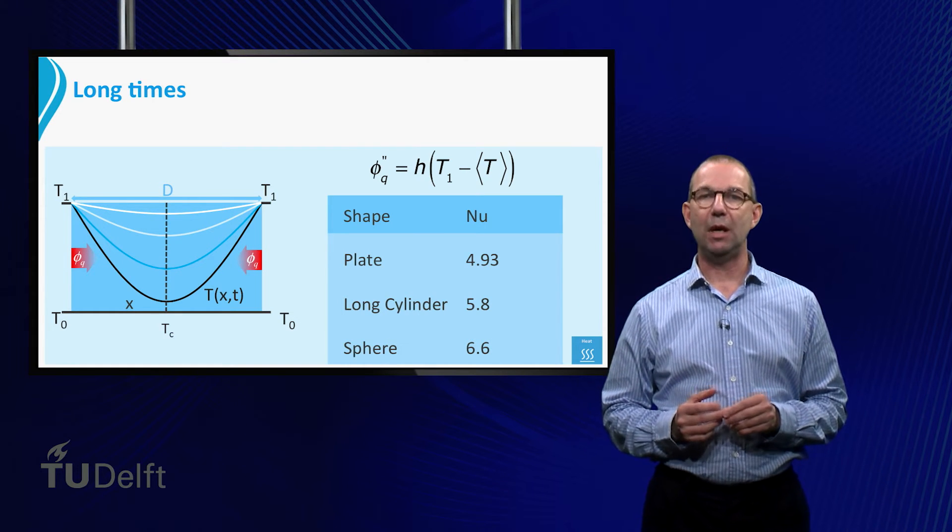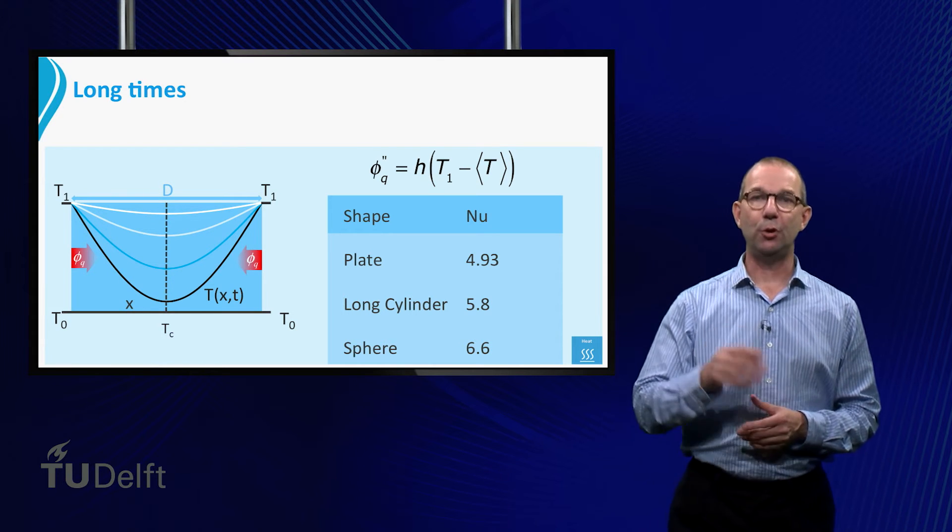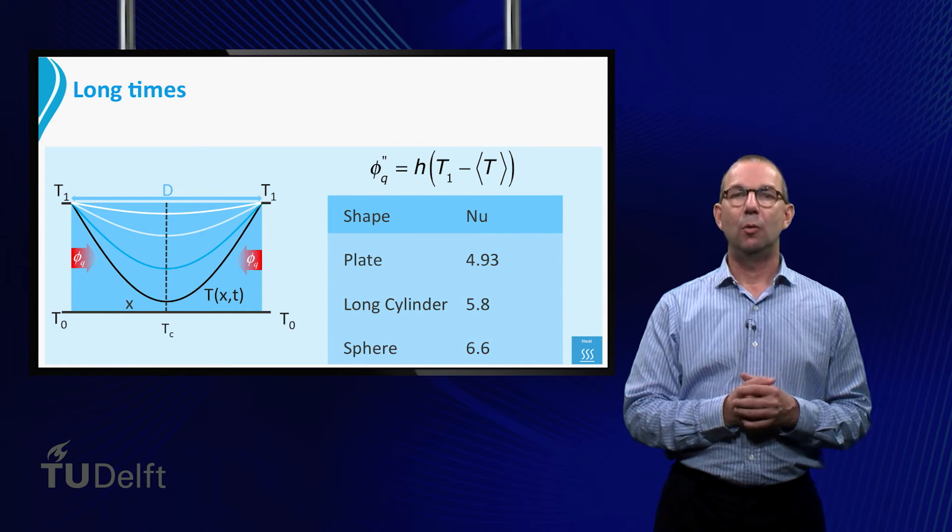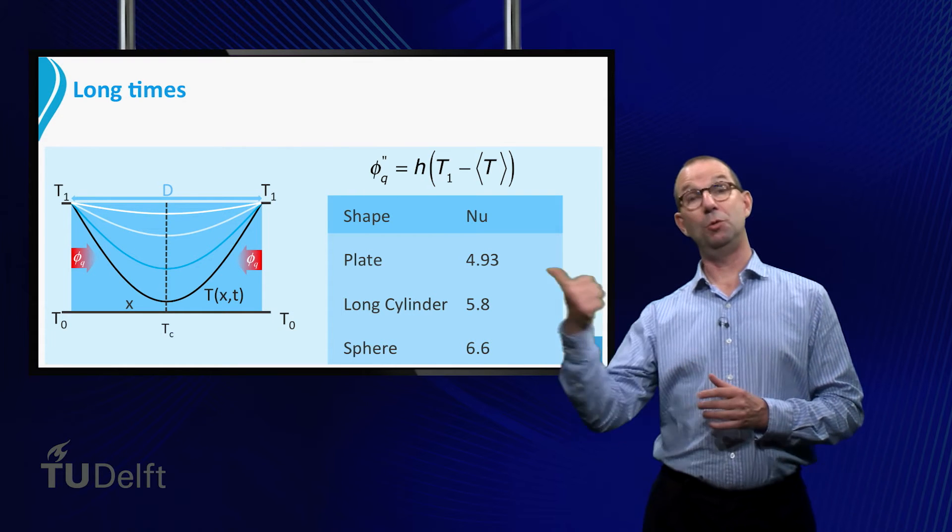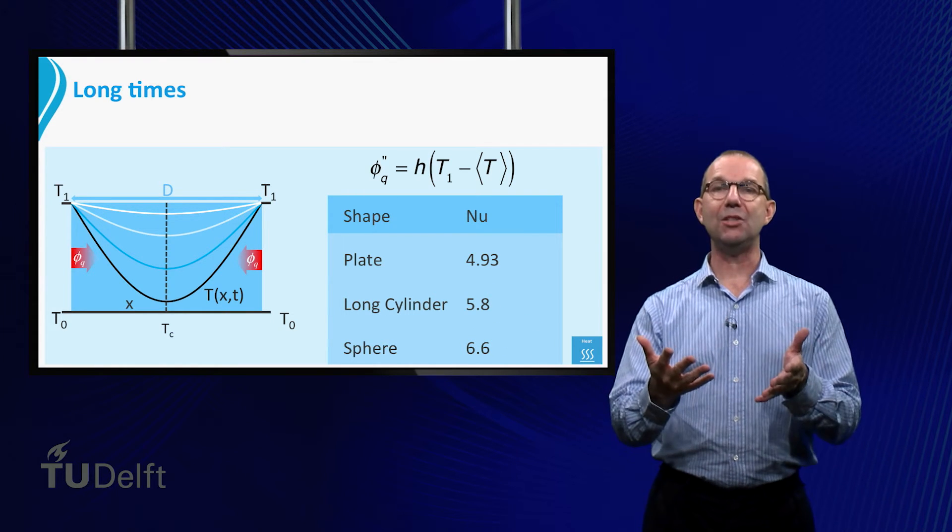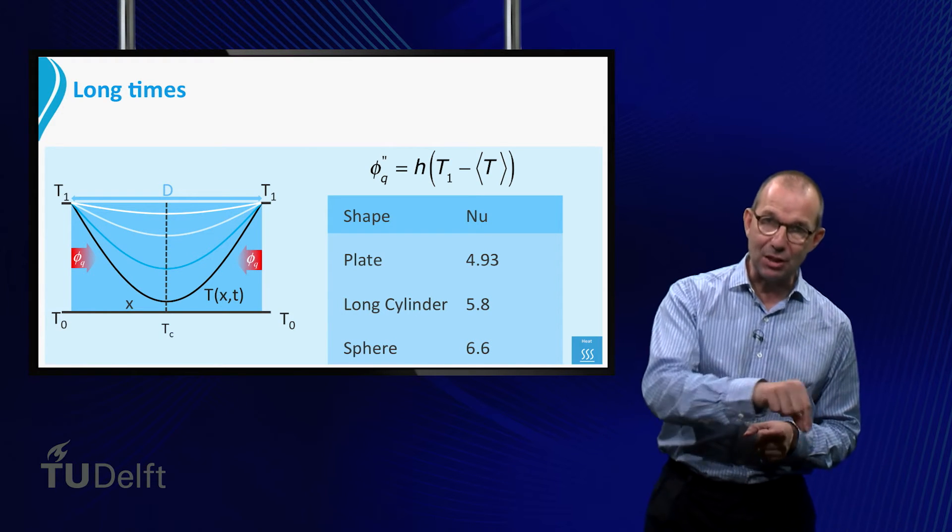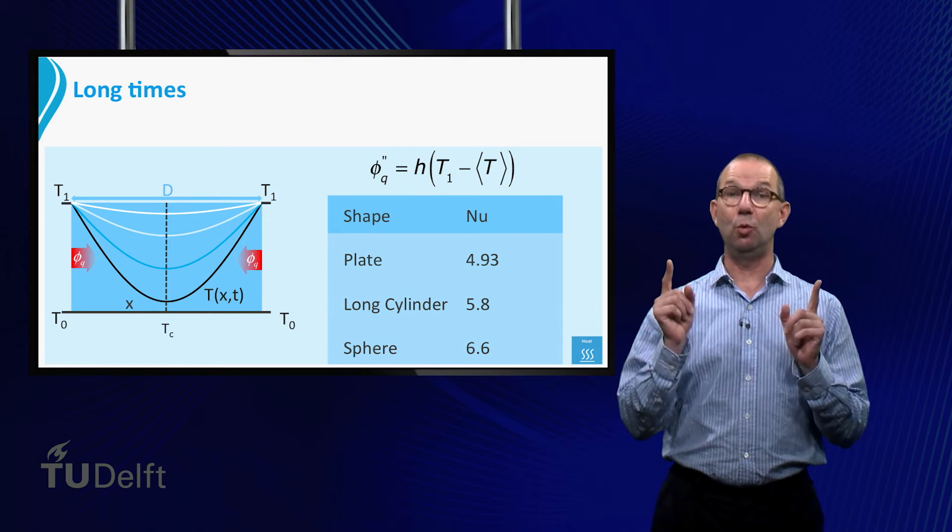Note that we have now two Nusselt numbers for conduction in a sphere. The first one we learned when Nusselt is 2 and dealt with steady state conduction from a sphere surface into the surrounding. Now we add Nusselt is 6.6. That is for unsteady heat transfer inside the sphere. Keep these two apart in your memory.